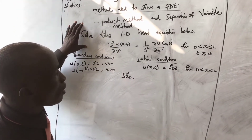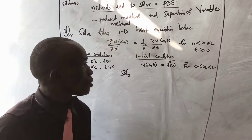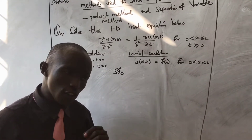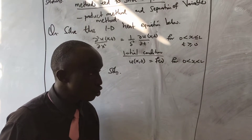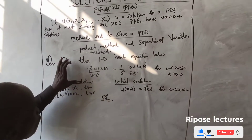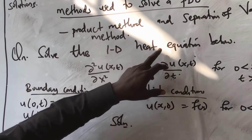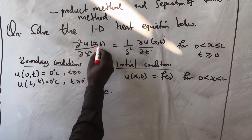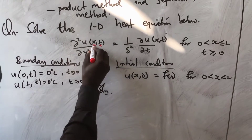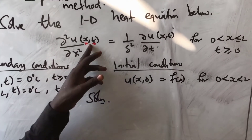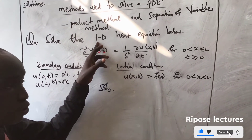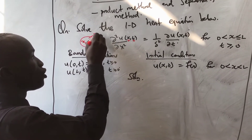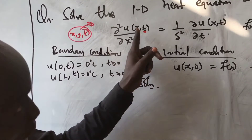In this video I'm going to talk about how to solve the one-dimensional heat equation. I will consider three cases: when the constant is greater than zero, equal to zero, and less than zero. It is one-dimensional because it has only two independent variables — x (space) and t (time). A two-dimensional heat equation would involve x, y, and t.